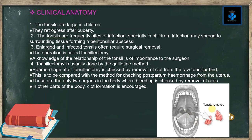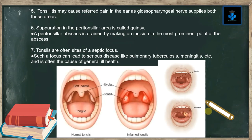Tonsillectomy is usually done by the guillotine method. Hemorrhage after tonsillectomy is checked by removal of the clot from the raw tonsillar bed. This is compared with the method for checking postpartum hemorrhage from the uterus — these are the only two organs in the body where bleeding is checked by removal of clots; in other parts of the body, clot formation is encouraged. Tonsillitis may cause referred pain to the ear because the glossopharyngeal nerve supplies both areas.